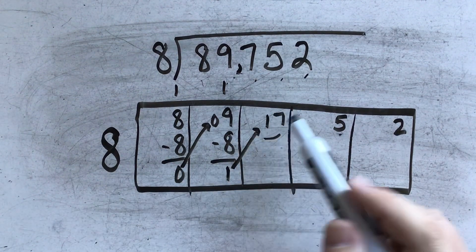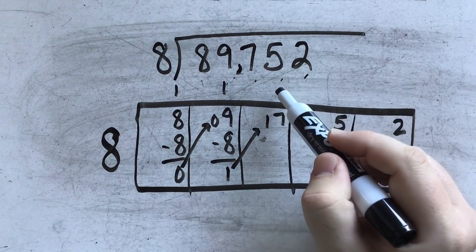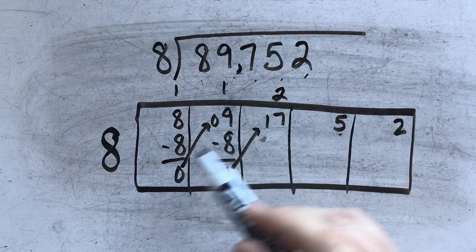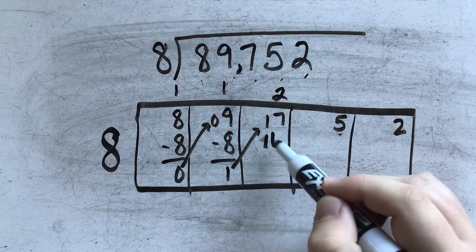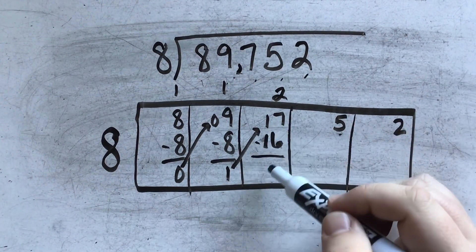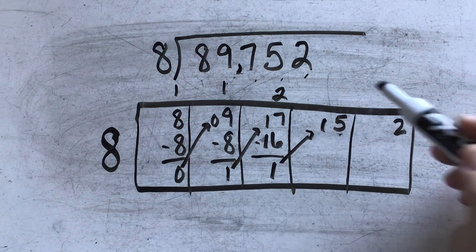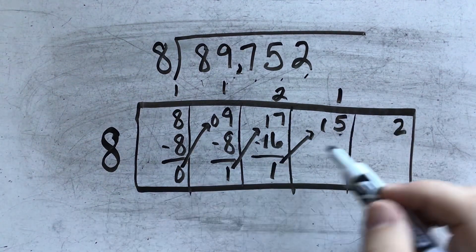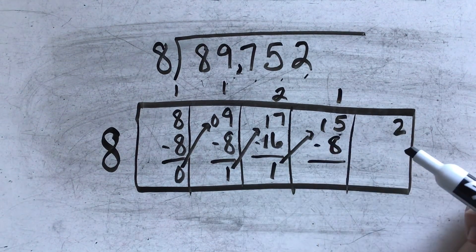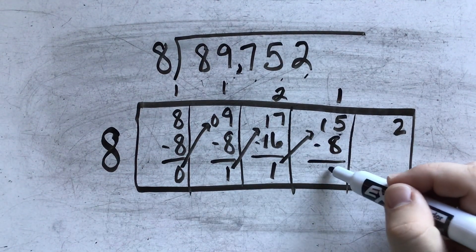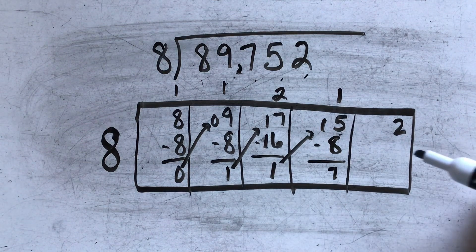8 divides 17 two times. 2 times 8 is 16. And when I subtract, there's 1 left over. 8 goes into 15 one time. 1 times 8 is 8. And when I subtract, there is 7 left over.